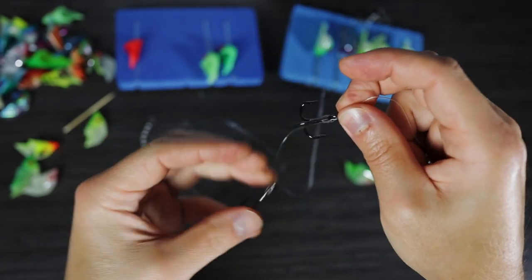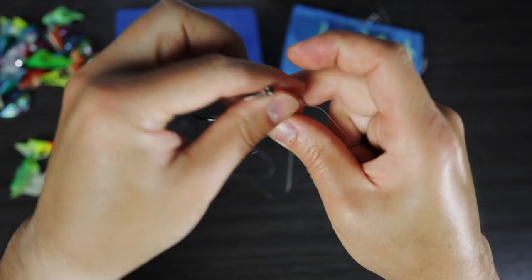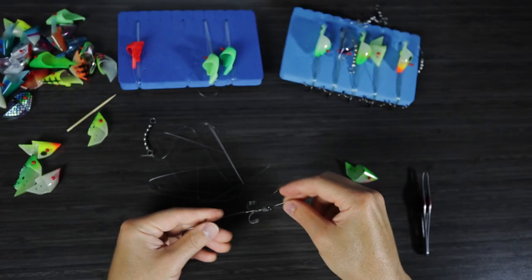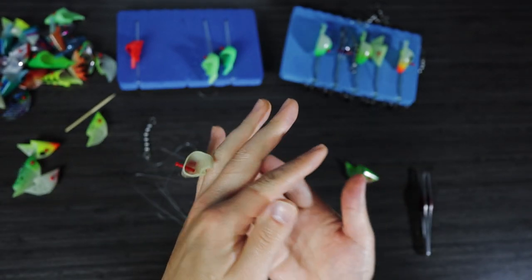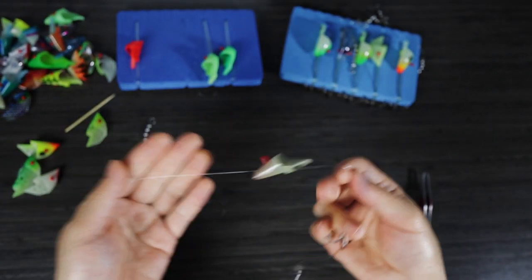You can see that with the bait loop knot at least, the two ends of the line coming out of the knot face directly away from each other. So that helps to keep this second hook in line with the first one. It's not, you know, it's not facing this way or something crazy.